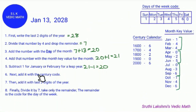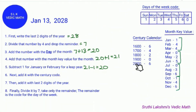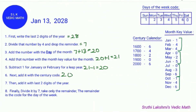Next, it says to add it with the century code. The year is 2028, which is in the 2000s. So we find 2000 on the century calendar — the 2000s code is 6. So we do 20 plus 6, which equals 26.